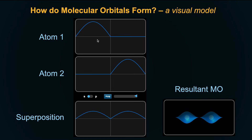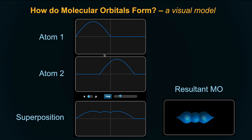Here we have atom 1 and atom 2. When they're far away, no overlapping happens. But when they come close together, they start interfering — the wave adds up with the other wave. Between the nuclei, the density or wave function increases, meaning a higher likelihood of finding electrons between the nuclei. That means they're attracted to both nuclei, which is a very good state for the electrons to be in.